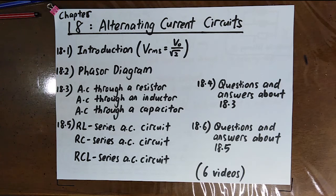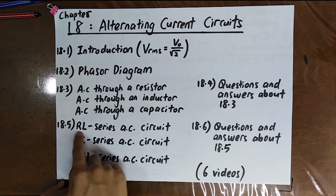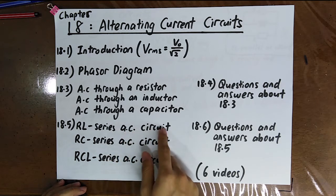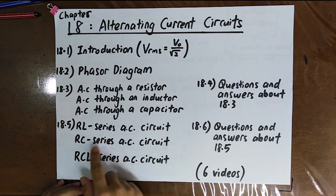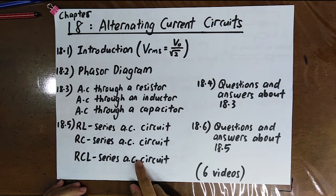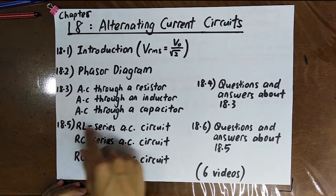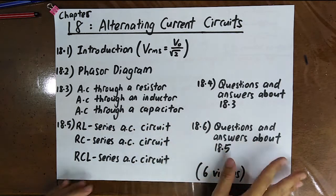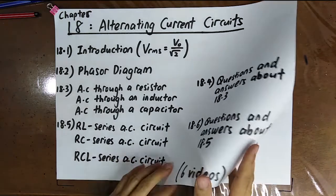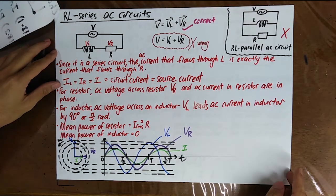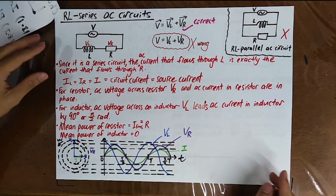In this video we will talk about the RL series alternating current circuit, RC series, and also RCL series alternating current circuit. R is resistor, L is inductor, C is capacitor.